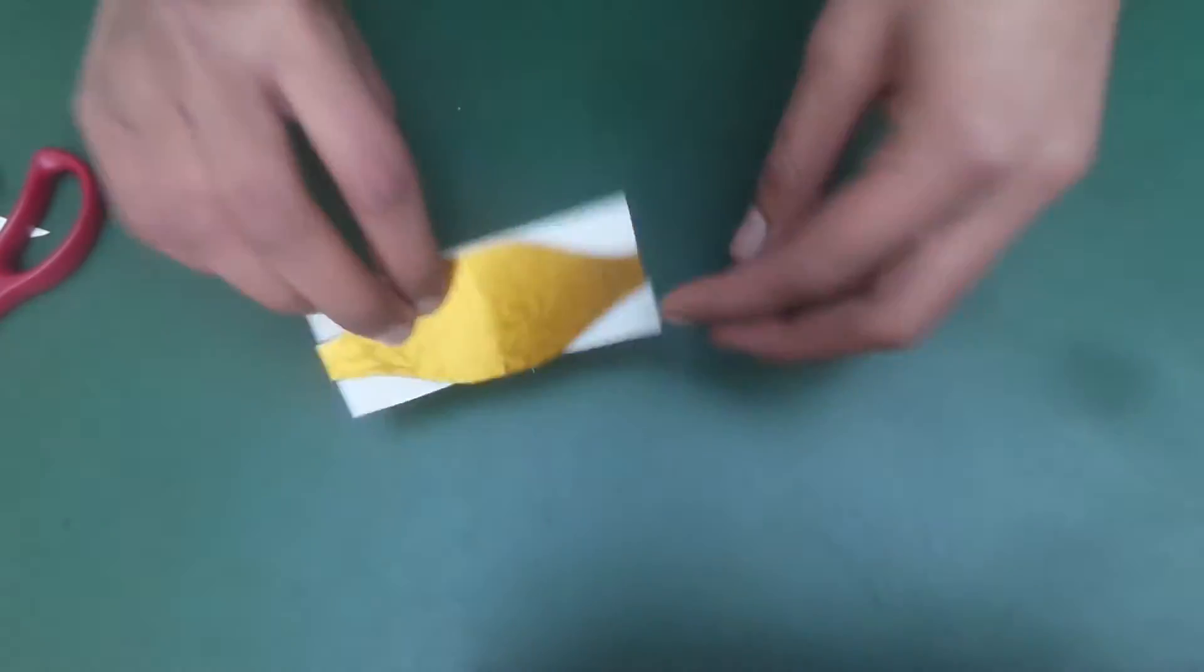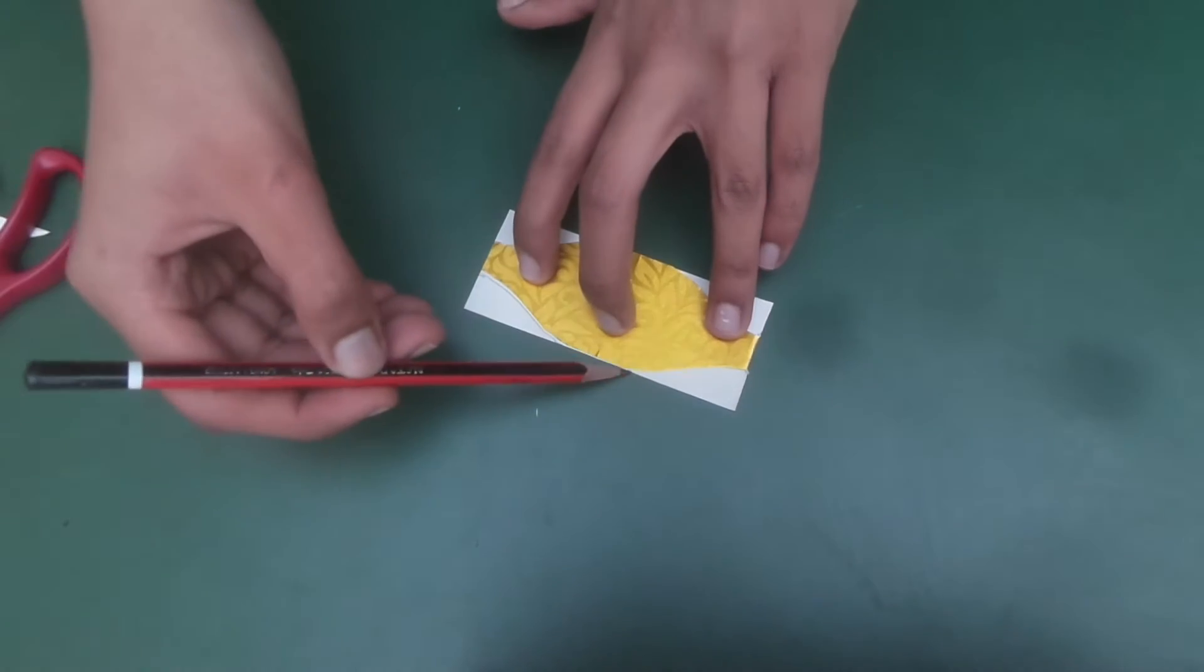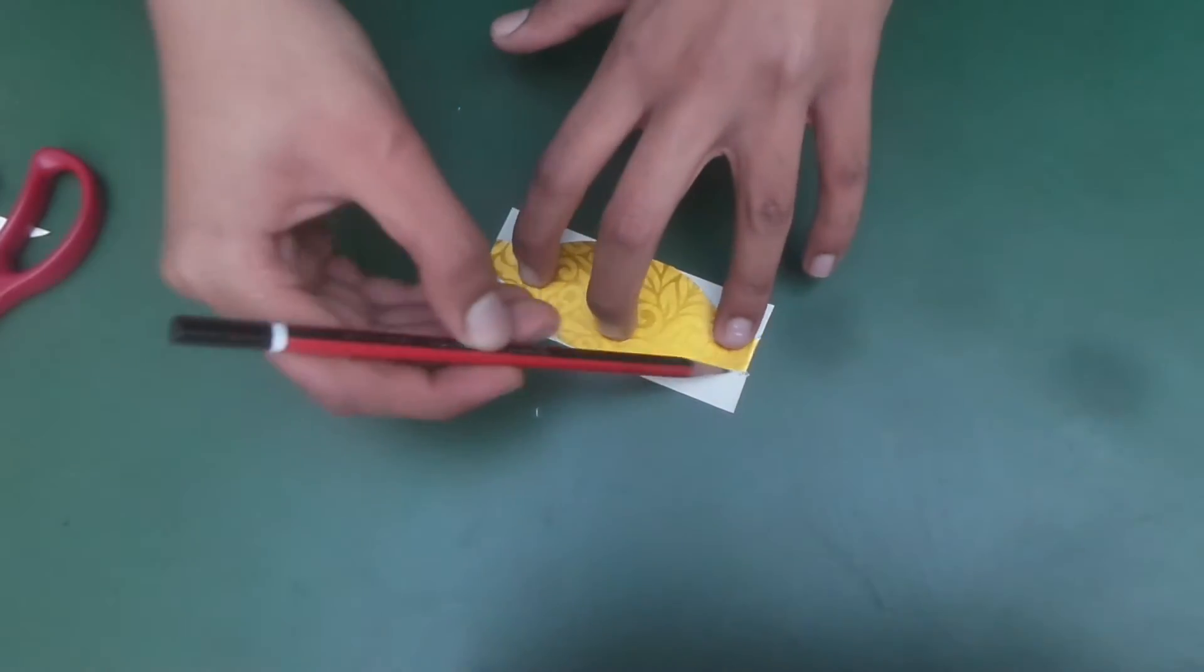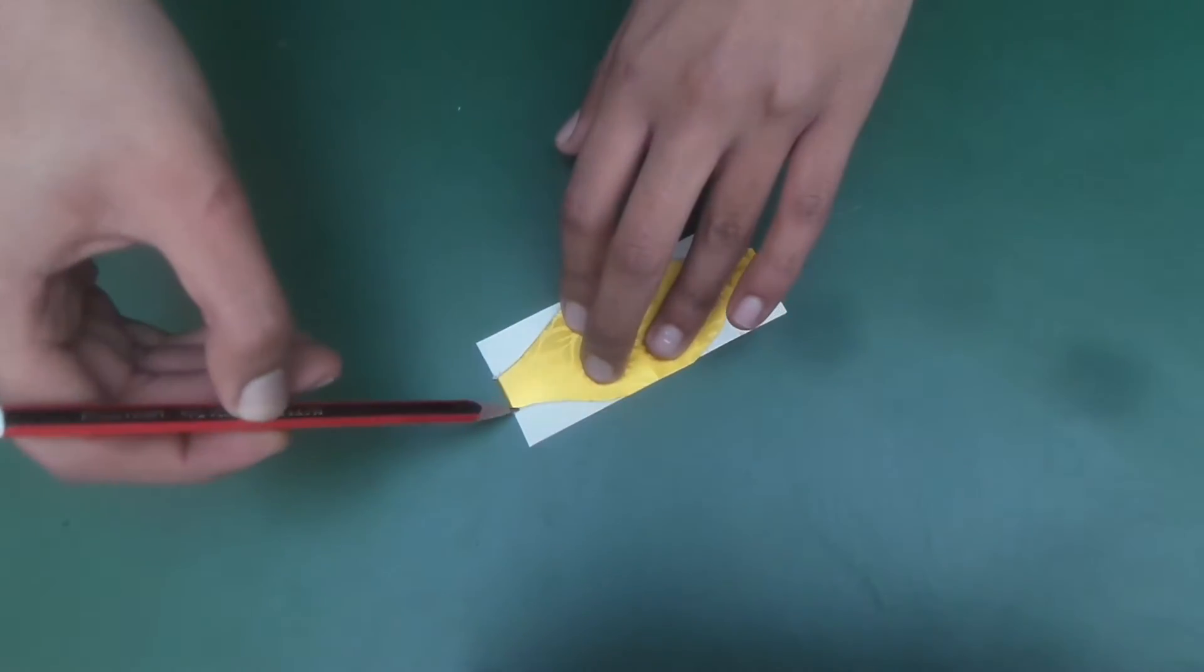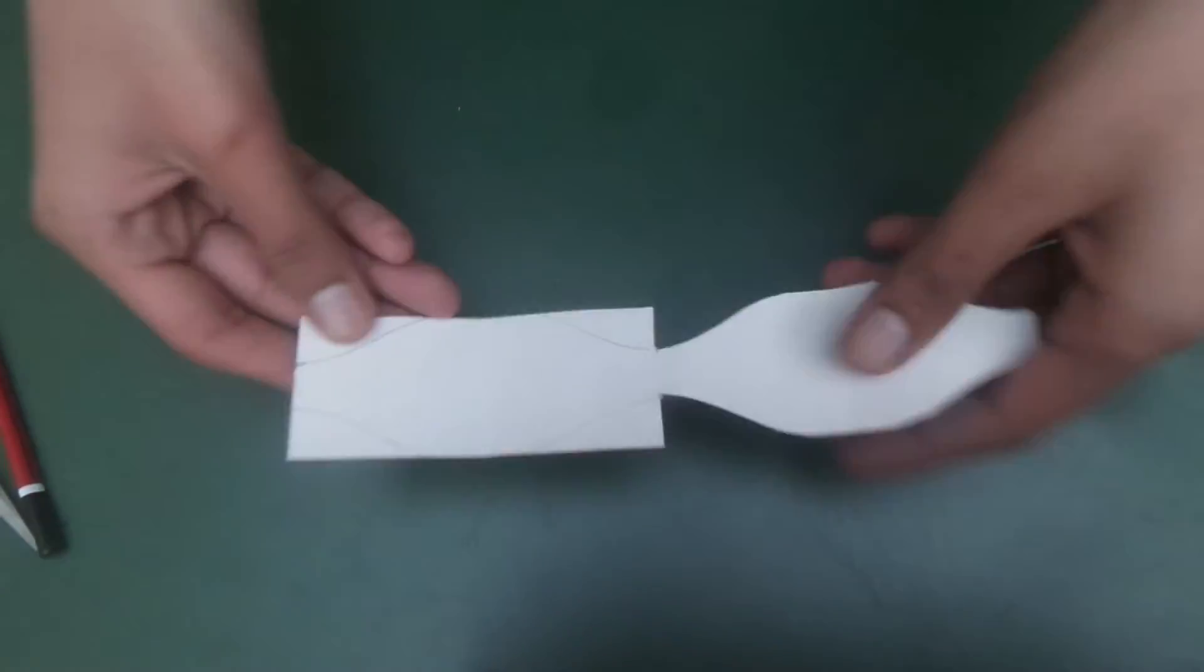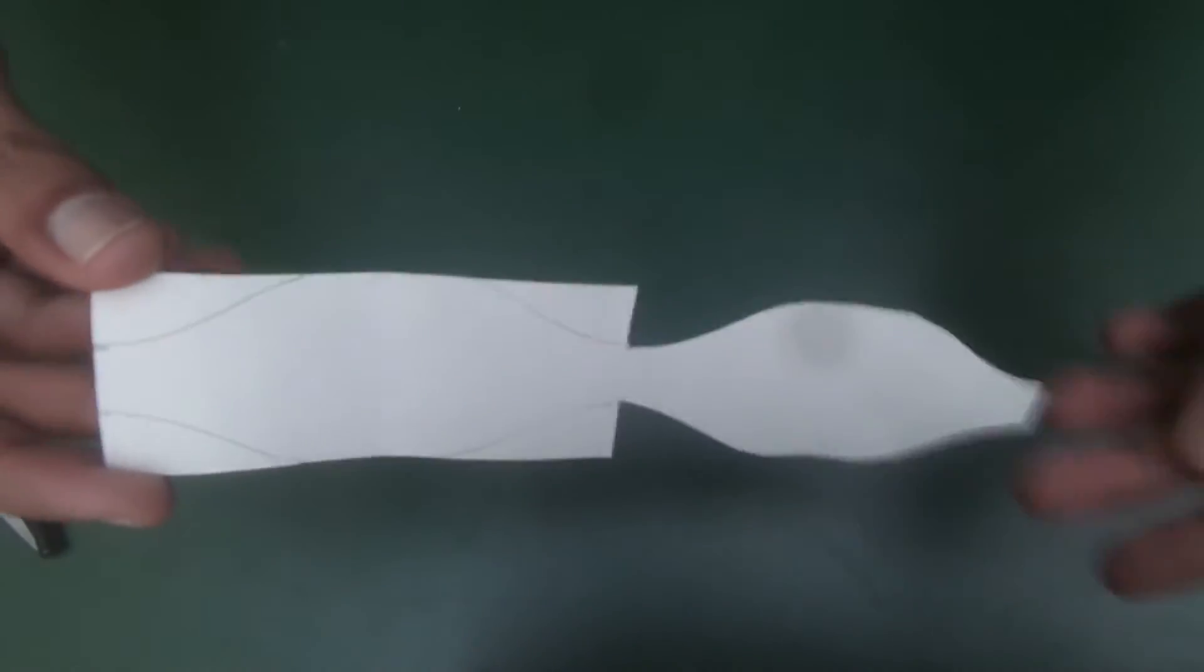This is the shape we want on the other side too, so I'm going to trace it again. And now I'm going to cut these two.